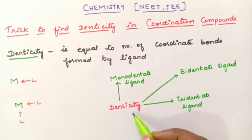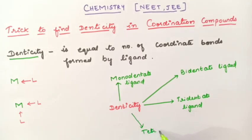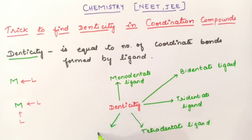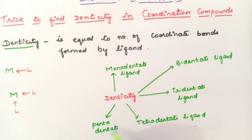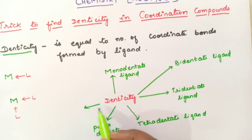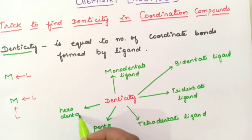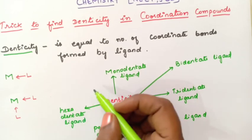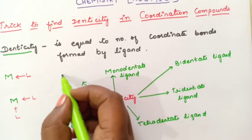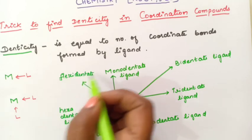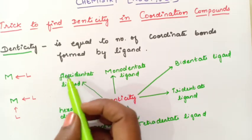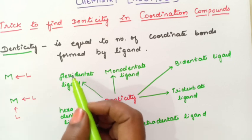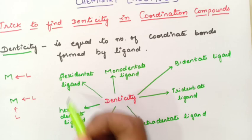If four coordinate bonds are present, then it is called as tetradentate ligand. If five are present, it is called as pentadentate ligand. If six are present, it is called as hexadentate. And there is one more type which is called as fluxidentate. The meaning of fluxidentate is fluxi is flexible — it does not form a fixed coordination bond, so it keeps varying. I will take one example and explain what a fluxidentate ligand is.